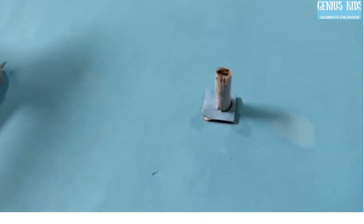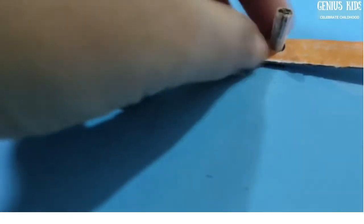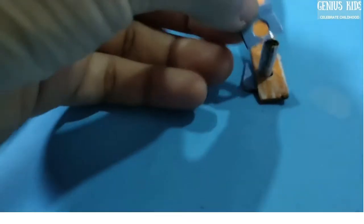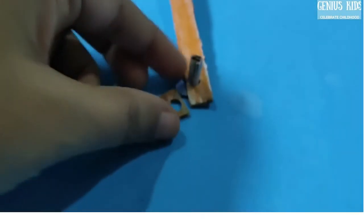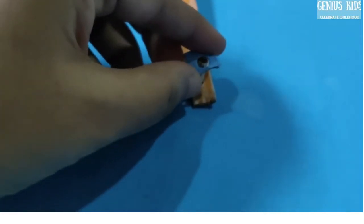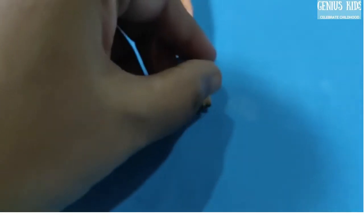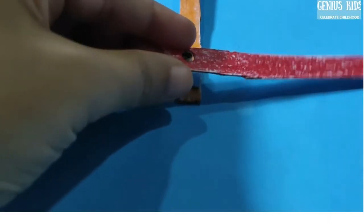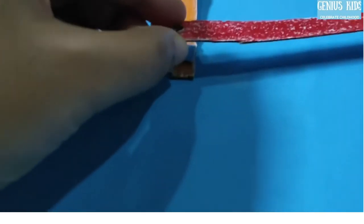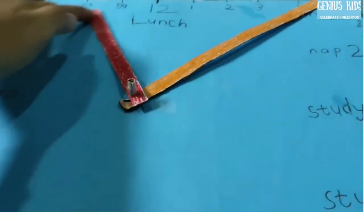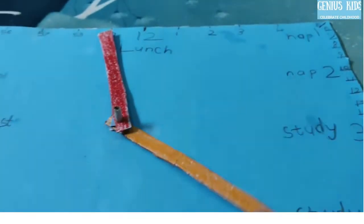Now I will put the minute hand. Now I will put this again. This is like a separator between the hour hand and the minute hand. Next is the hour hand. So you can see that they rotate freely, and even the minute hand is rotating freely.